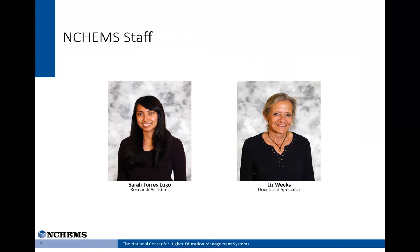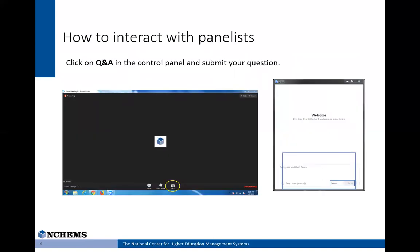When you are ready to pose a question or make a comment, please click on the Q&A in the controls. If you're in full screen mode, you may need to hover your mouse over the screen to make the controls visible. Once you click on the Q&A, a window appears — please type your question in the text field and click Send to submit it. If you want to pose a question to a specific panelist, please begin your question with the name of that panelist. The chat function won't be monitored, so please use only the Q&A function.